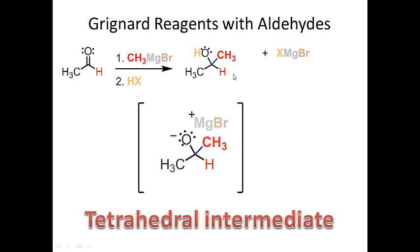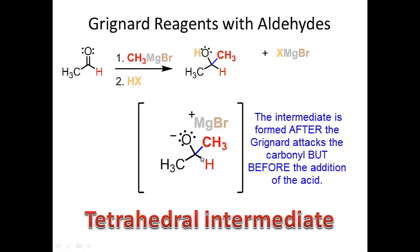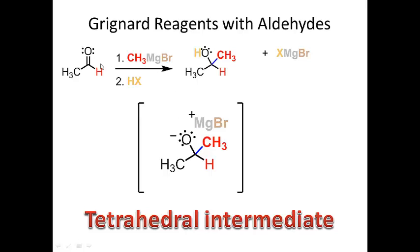Let's look at what the intermediate looks like. After the first step, the Grignard adds into the carbonyl carbon and the pi bond is broken, giving a negatively charged oxygen. The magnesium simply comes here — it's just an ionic attraction. This is what we call a tetrahedral intermediate. Anytime I add a Grignard to a carbonyl, I go through this type of tetrahedral intermediate.